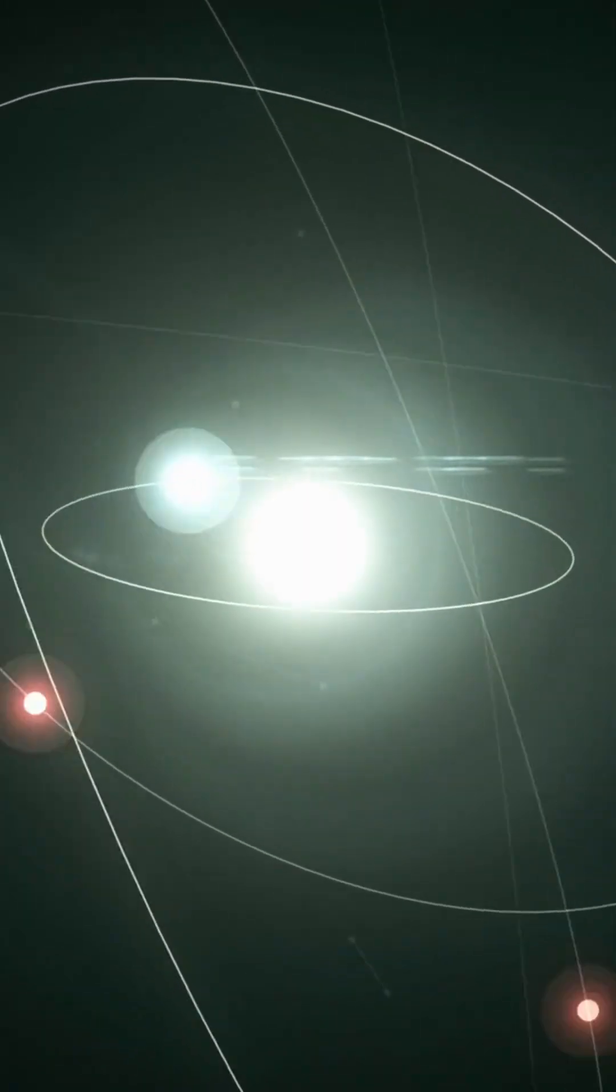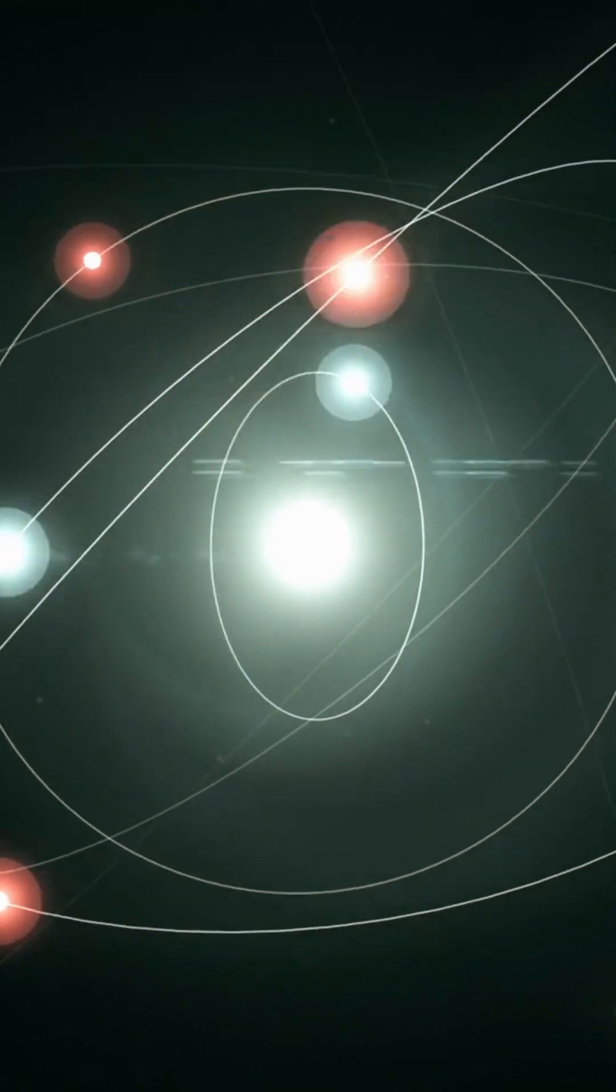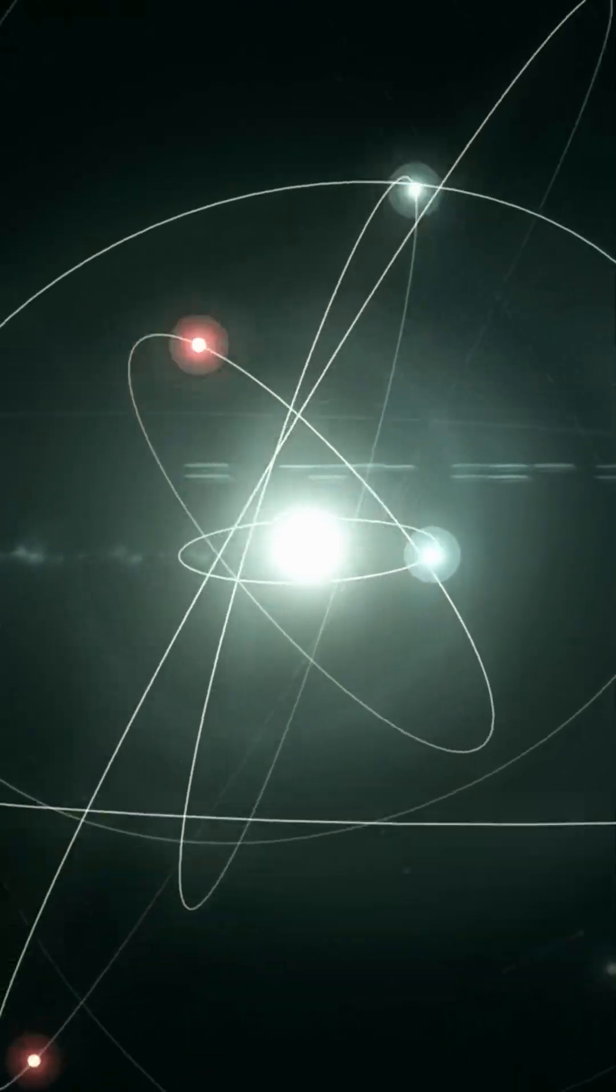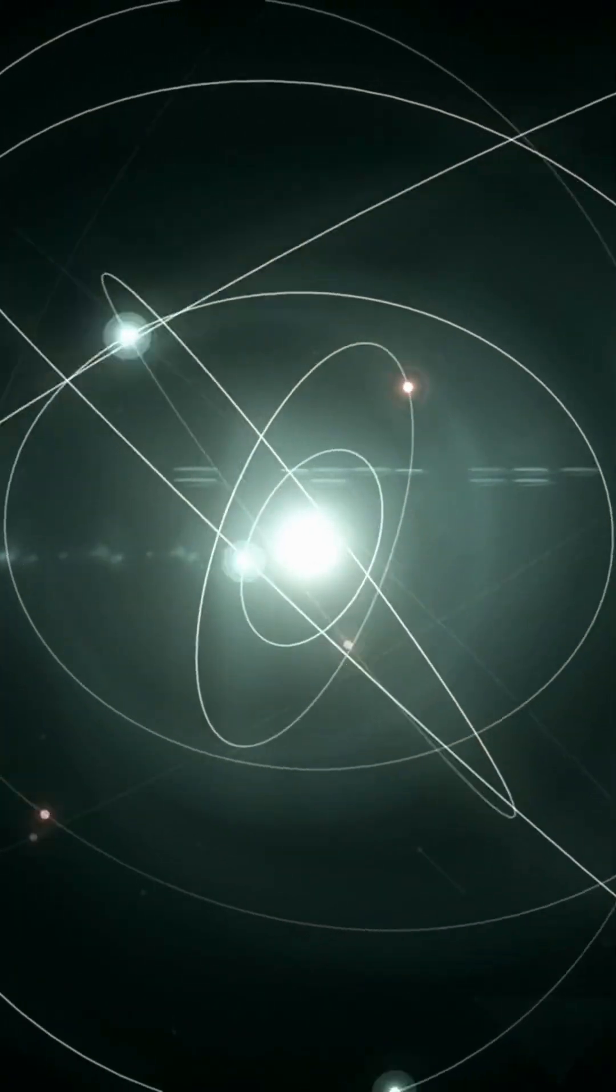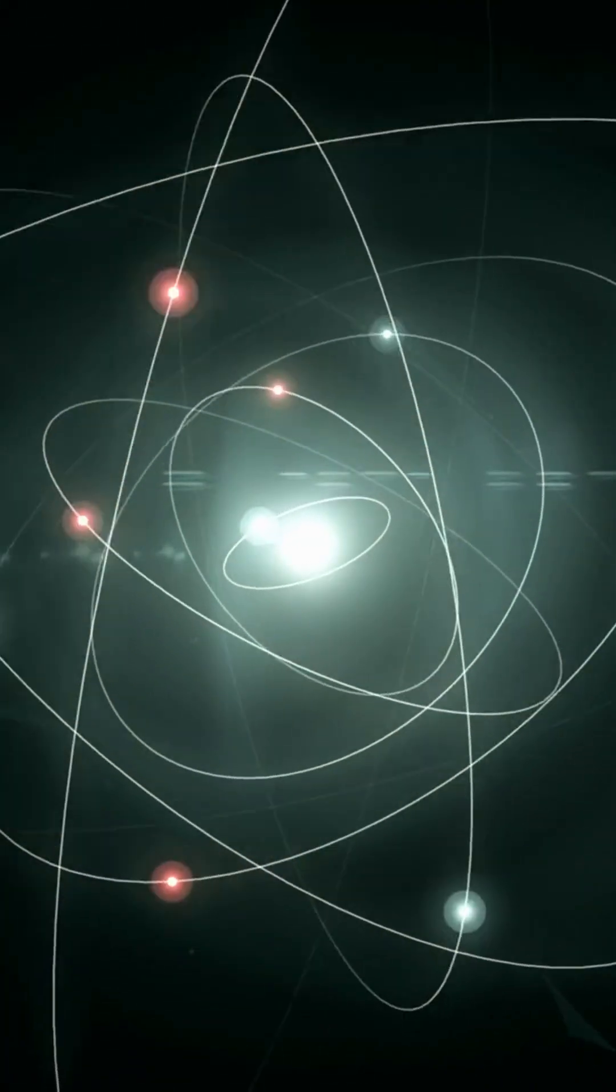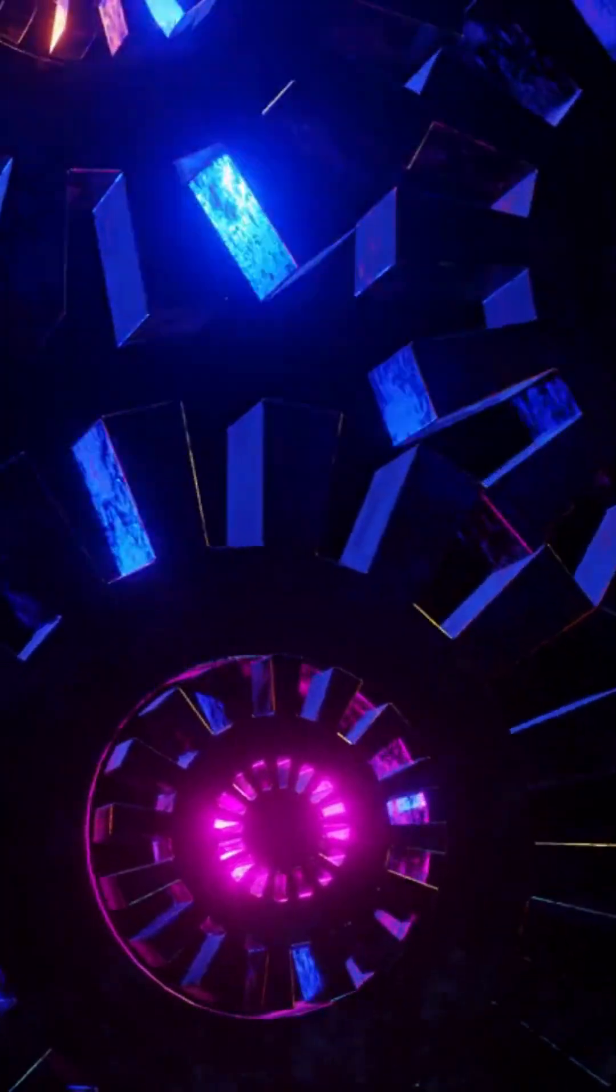Electrons are tiny, negatively charged particles that orbit around the nucleus of an atom. They are one of the three fundamental subatomic particles, along with protons and neutrons.